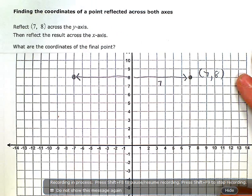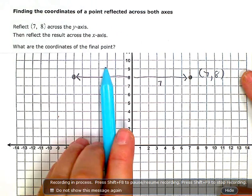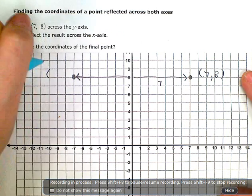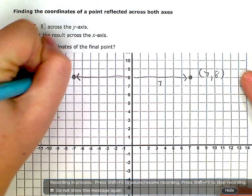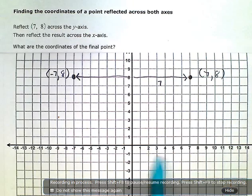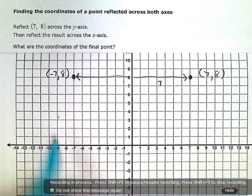When I reflect it over the y-axis, my new coordinates are going to be (-7, 8). Because I went from being on the positive side with my x-coordinate to the negative side with my x-coordinate.